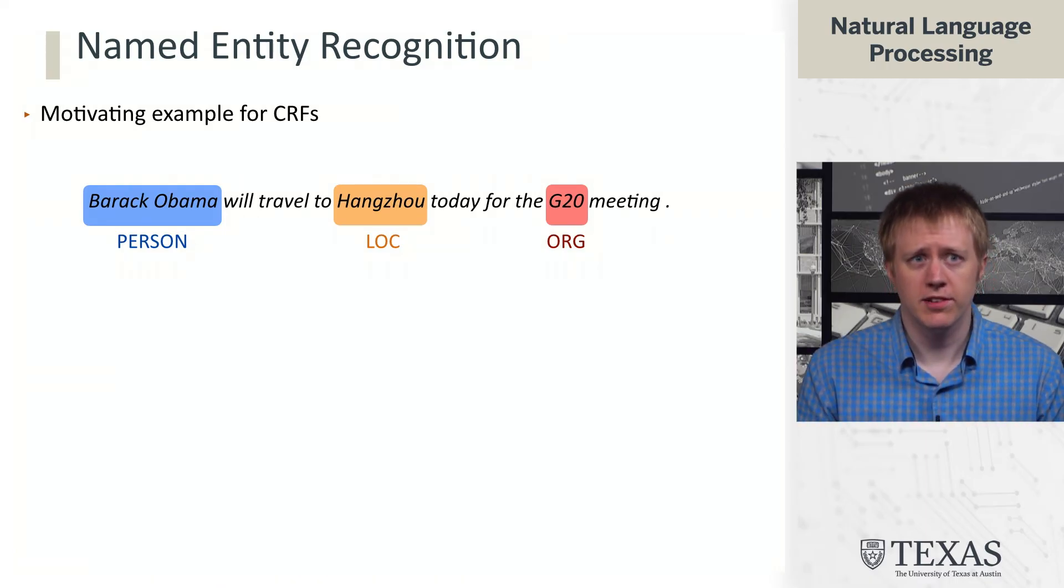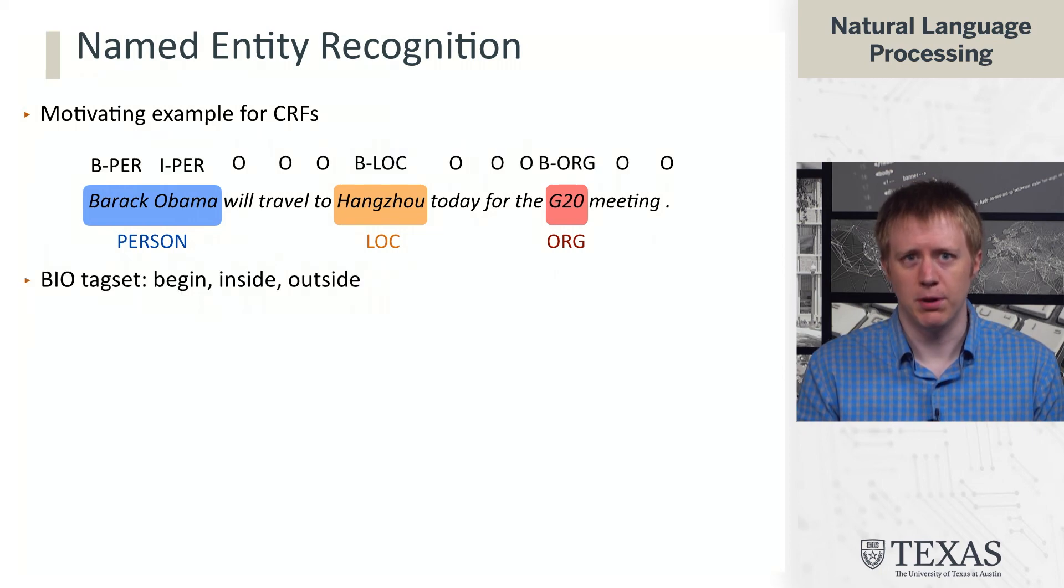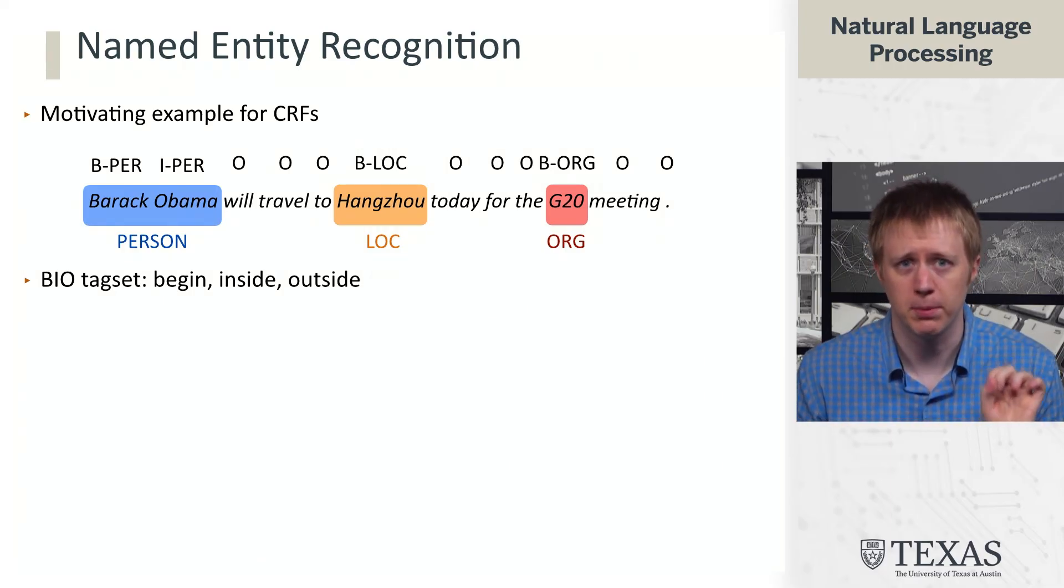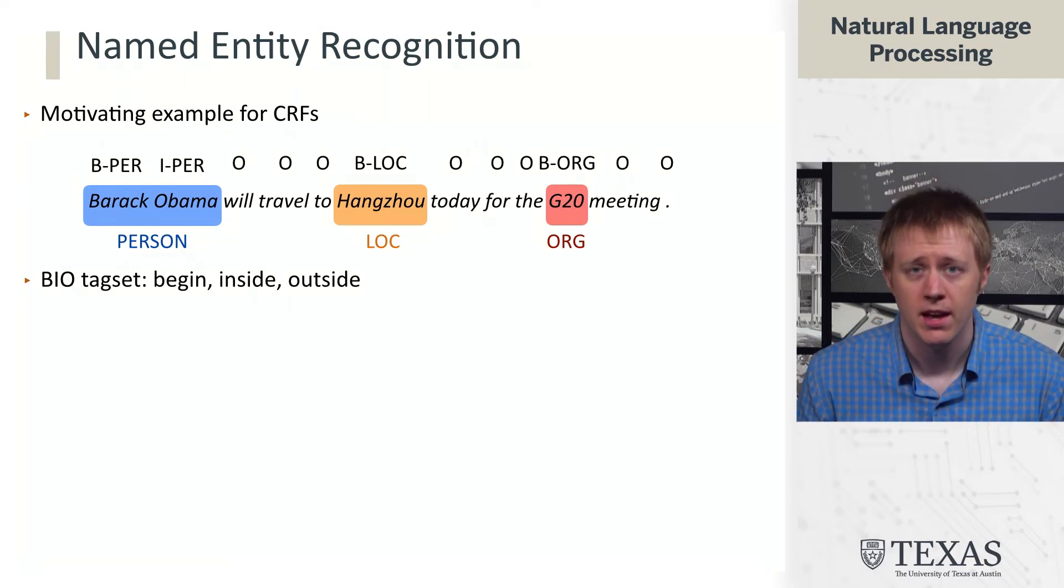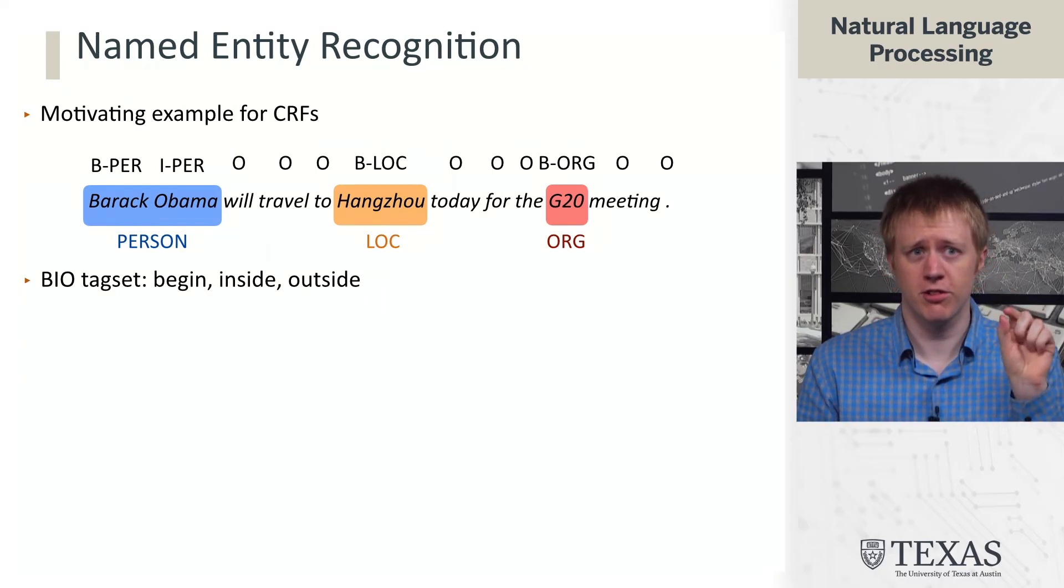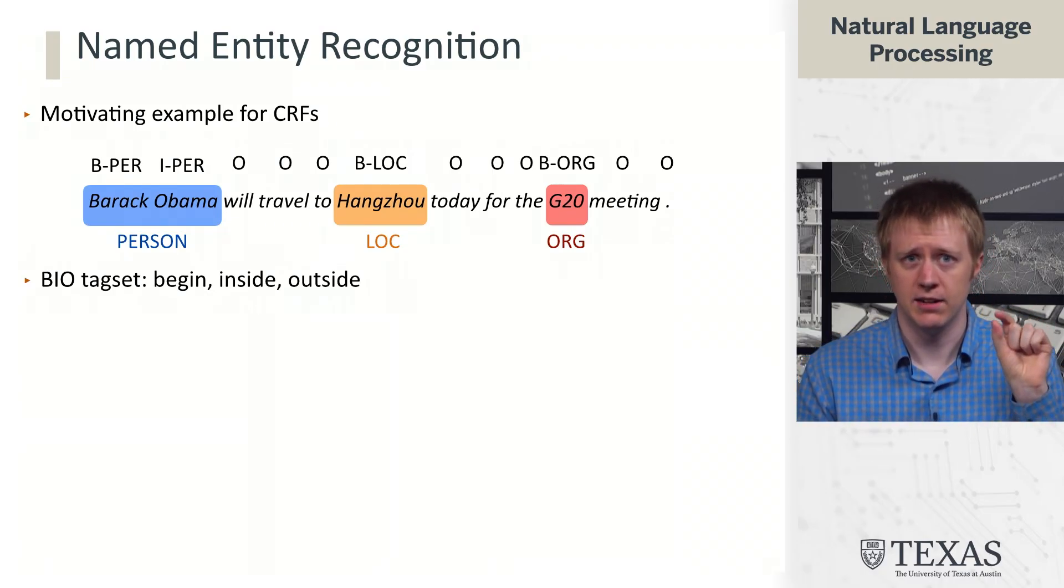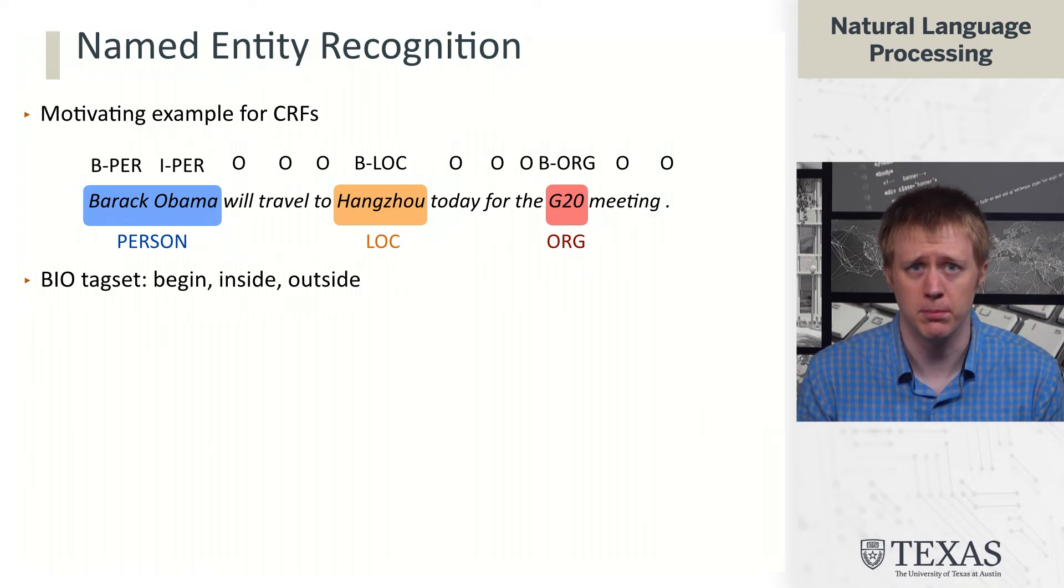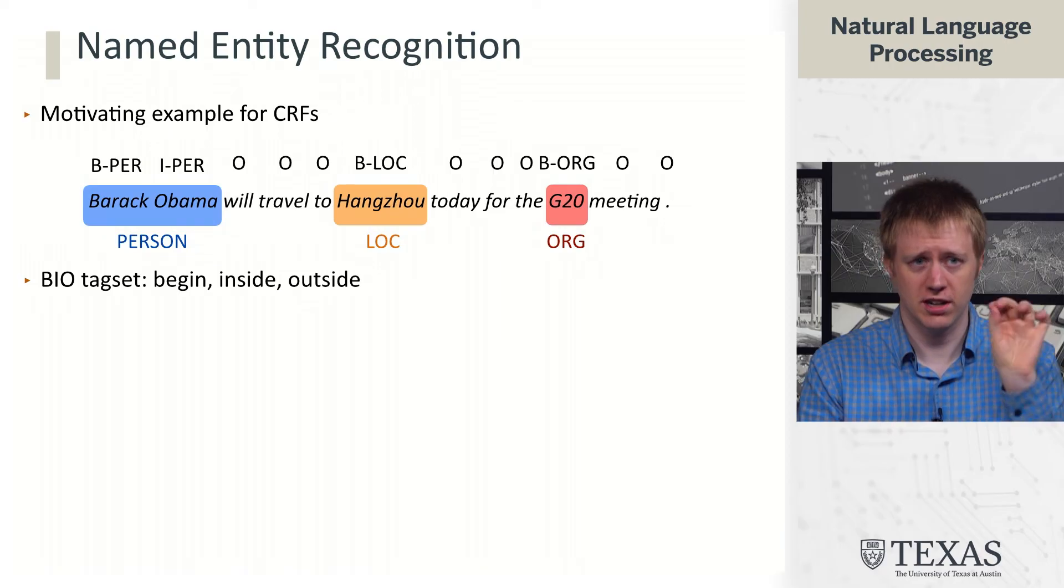The way we're going to do this is we're going to treat it as a tagging problem. So we can do this by encoding these chunks with what's called a BIO tag set. And BIO stands for begin inside and outside. And so the way this works is the first word in a chunk will always get the B tag with the associated type. That's what B-per means. And then I-per indicates that this chunk continues.